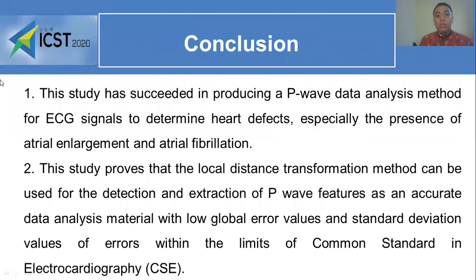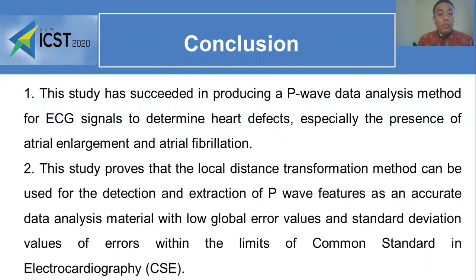Conclusion: First, this study has succeeded in producing a P-wave data analysis method for ECG signals to determine heart effects, especially the presence of atrial enlargement and atrial fibrillation. Second, this study proved that the local decision transformation method can be used for the detection and extraction of P-wave features as accurate data analysis material, with low global error values and standard deviation of error within the limits of common standards in structural cardiometry.